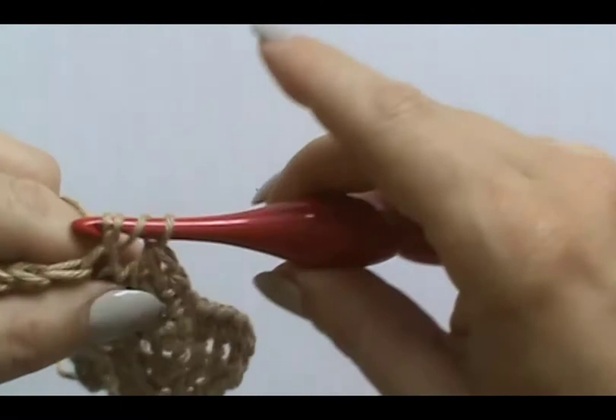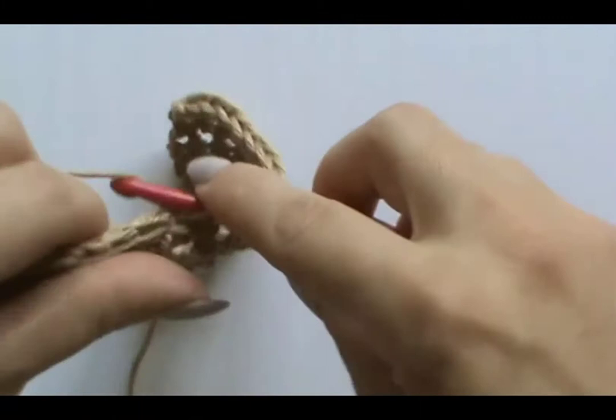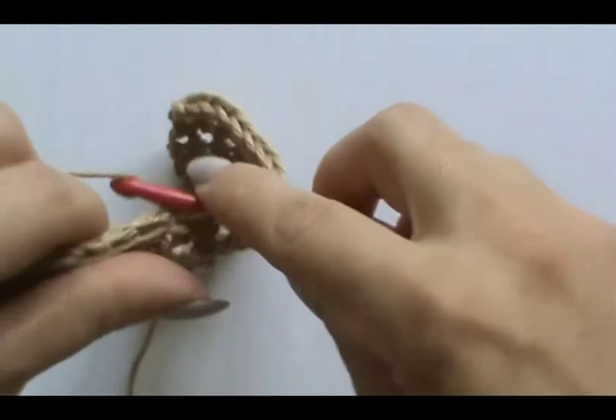So now you just continue to crochet half doubles all the way to the end, and your row will look nice and neat.